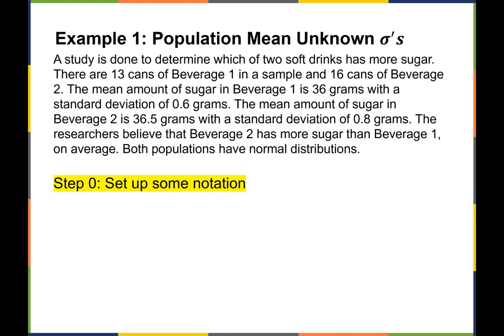Let's jump right in with an example. The first example is comparing population means when the standard deviations of the population are unknown. A study is done to determine which of two soft drinks has more sugar. There are 13 cans of Beverage 1 and 16 cans of Beverage 2. The mean amount of sugar in Beverage 1 is 36 grams with a standard deviation of 0.6 grams, and the mean for Beverage 2 is 36.5 grams.